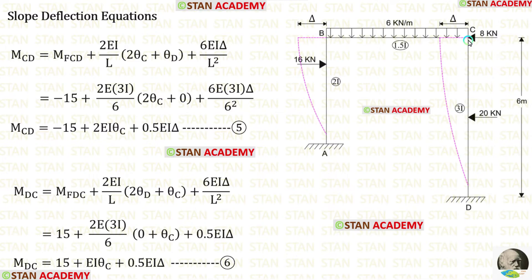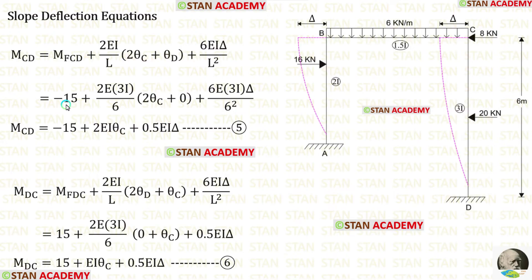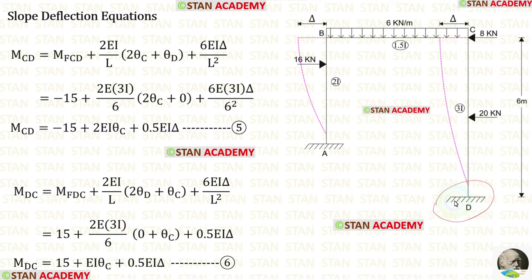Now let us make the slope deflection equations in column CD. Column CD is also subjected to sway, so we add the sway terms to the equations. Applying the fixed end moments, moment of inertia 3I — and since point D is a fixed support, theta D = 0 — we obtain two equations.